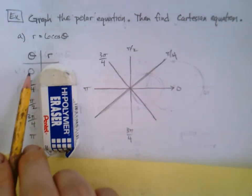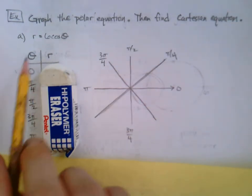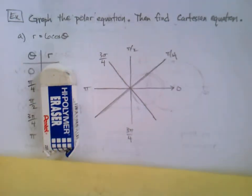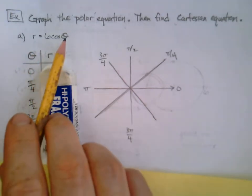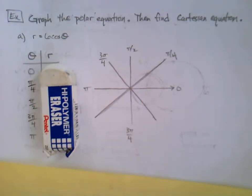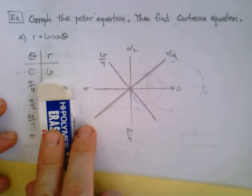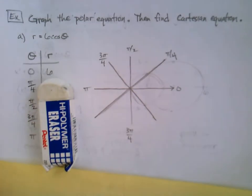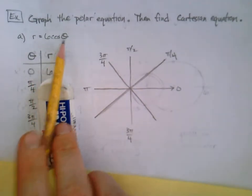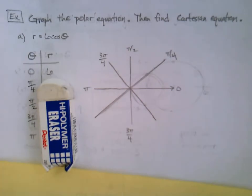All right, so I'm just gonna go in and plug each of these values of theta in right there, find out what the radius is. Well if theta equals zero, then cosine of zero is one and I get a radius of six. If theta is pi over four, cosine pi over four is root two over two, but then I'm gonna multiply by six so I get three root two.